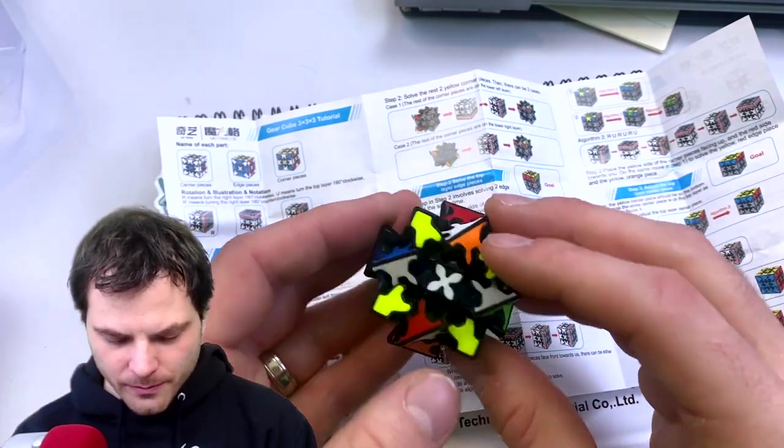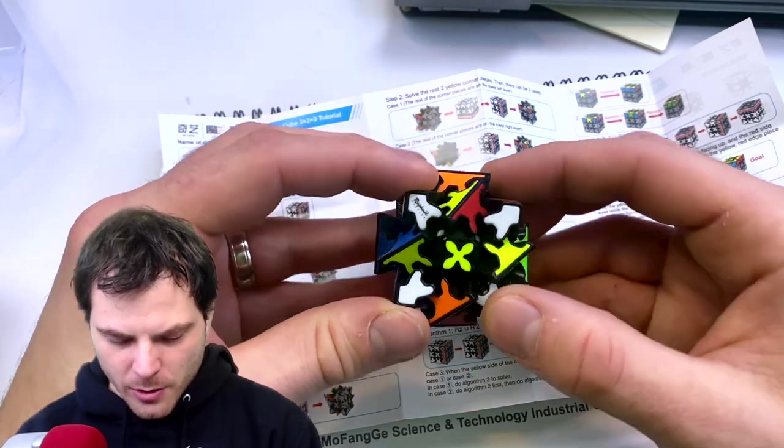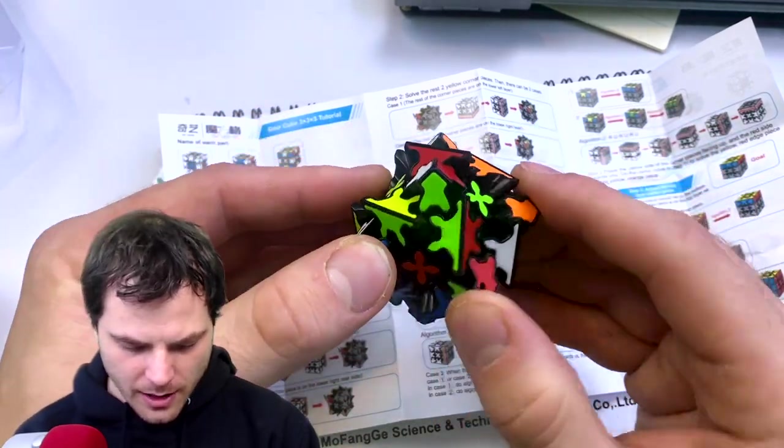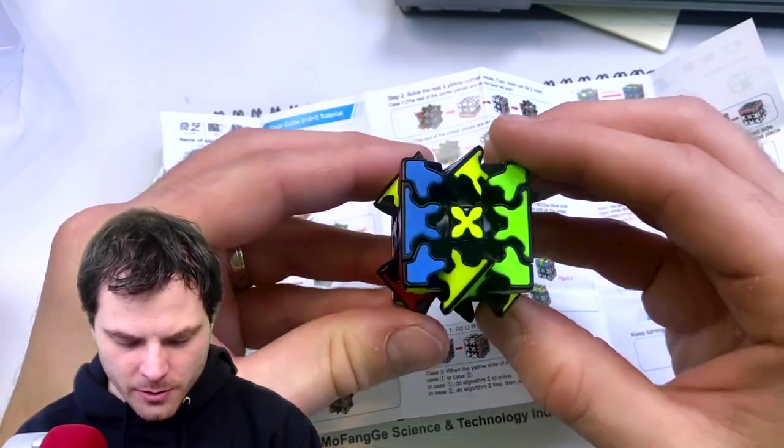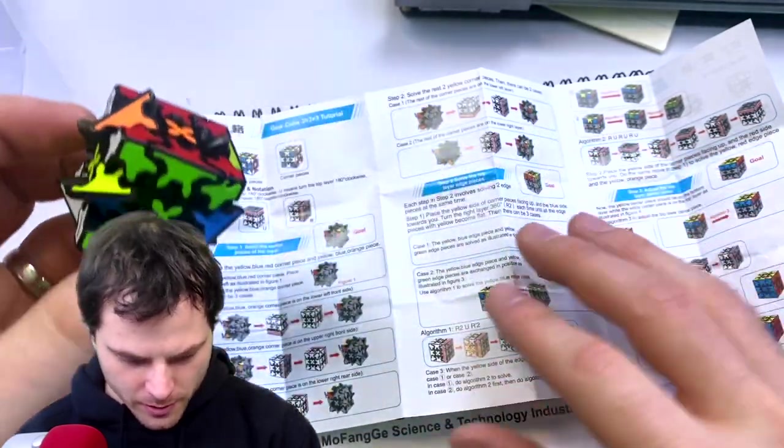Okay. So step one, solve the corner pieces of the top layer. So I'm going to try without reading these exact instructions. Okay. Corner pieces not quite solved. They're in opposite spots. So if we do an Ortega alg, oh, we can't actually do it like that. There we go. Which is R2, F2, R2. That will solve the corners.